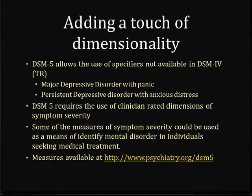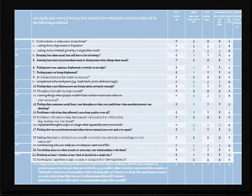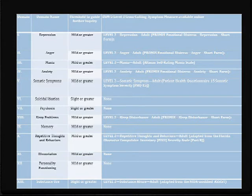This is the DSM-5 cross-cutting measure — the Step 1 cross-cutting measure. It asks a series of questions relating to broad areas of problems in human beings. On the extreme left there are Roman numerals, each relating to a specific kind or area of diagnosis. Answers are given not as yes or no, but in terms of frequency of occurrence. The Roman numerals stand for: I is depression, II is anger, III is mania, and so forth. If someone displays these kinds of symptoms, you can then move to Step 2 measures, which give a more precise read on whether the individual has a problem in that area and how severe it might be.